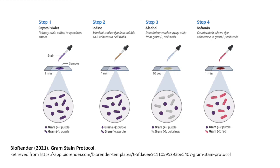The next step is to treat with an organic solvent. Some protocols will use alcohol, others will use acetone — which is the one we'll see today — and some others will use a mixture of both alcohol and acetone. In any case, the goal of this decolorisation step is to remove the crystal violet iodine complex preferentially from the negative organisms, thus enabling you to follow up with some form of counterstain — safranin is demonstrated here — to highlight the negative organisms.